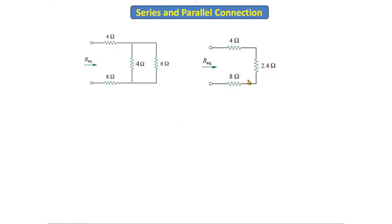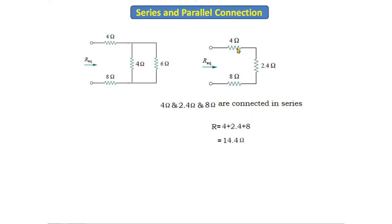Now the 4 ohm, 2.4 ohm, and 8 ohm resistors are all connected in series. When three resistors are connected in series, the formula is R = R1 + R2 + R3. So R = 4 + 2.4 + 8 = 14.4 ohms. Finally, the total equivalent resistance of the given circuit is 14.4 ohms. That concludes the first problem.